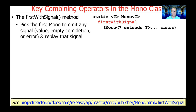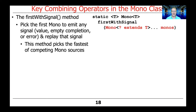The next method we're going to talk about is similar in spirit but works in a slightly different way. This method is called FirstWithSignal. What it does is you give it a var-args list or array of Monos, and it will simply pick the first Mono to emit any signal — which could be a value, an empty completion, an error, or whatnot — and then it'll go ahead and replay that signal. What it's really doing is taking all the Monos passed in and picking the fastest one. So it's saying: I've got a whole bunch of Monos, I'm going to pick the one that completes first.